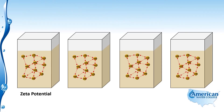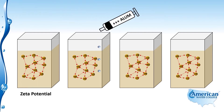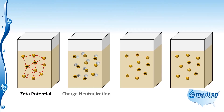In order to overcome that zeta potential so that these colloids can come together and form micro floc and then macro floc so that they can ultimately settle out, we need to neutralize the negative charge. We do that by the addition of positive ions. Aluminum sulfate — alum — is what we add here. When we add the alum, positive ions from the alum react with the negatively charged colloids and effectively neutralize the charge. We call that step charge neutralization.